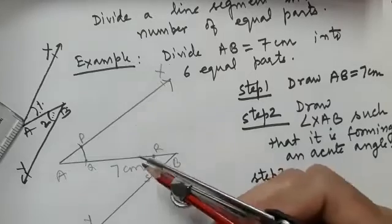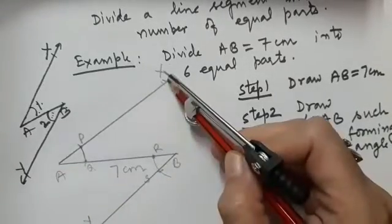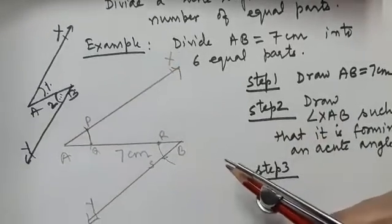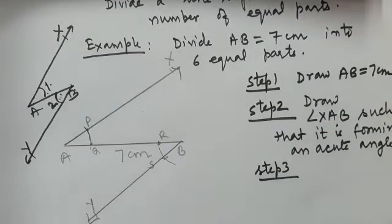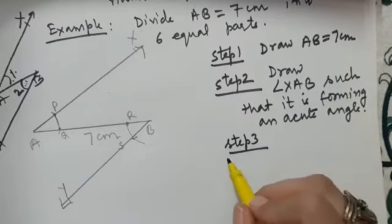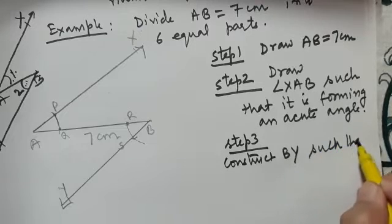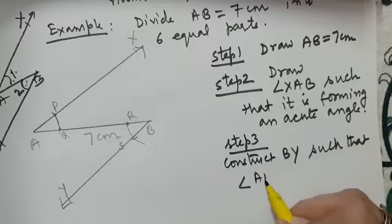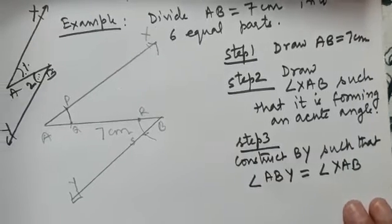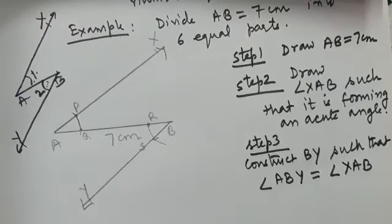Now you will see that this angle ABY is equal to angle BAX. Now alternate interior angles are equal. So AX is parallel to BY. So AX is parallel to BY. This is up to this we have done. So what will be step 3? What we are going to write? Yes, in step 3 we will write down construct BY which is a ray such that angle ABY is equal to angle XAB. Why we have done this? Yes, because this is making a pair of alternate interior angles.